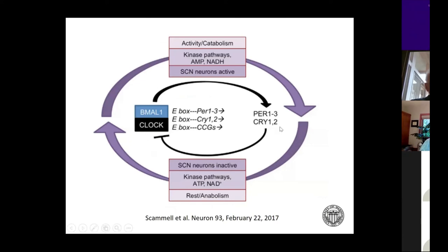There is circadian rhythmicity to nearly all the cells in your body, driven by a transcriptional-translational feedback loop. BMAL1 and CLOCK form a heterodimer that turns on E-box elements to produce transcription of clock genes — Period, Cryptochrome, and CLOCK genes. As those get translated and build up in the cell, they go back to inhibit the BMAL1/CLOCK heterodimer to reduce their own production. We have CLOCK genes within individual cells controlling their circadian rhythmicity — it's really a whole-body process, not just in the brain.